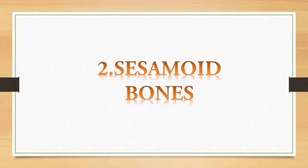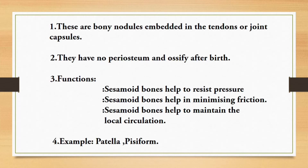The next question is sesamoid bones. Sesamoid bones are bony nodules embedded in the tendons or joint capsules. They have no periosteum and ossify after birth. The functions of sesamoid bones are: they help to resist pressure, they help in minimizing friction, and they help to maintain the local circulation. Examples are patella and pisiform.